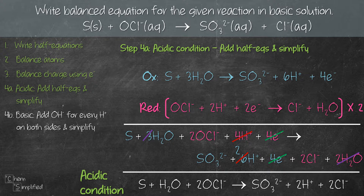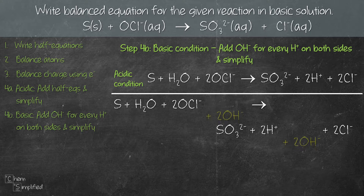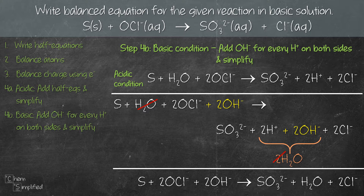If you're looking to balance in basic condition like this question, we have one more step: add OH⁻ on both sides for every H⁺ that appears in the equation. From the balanced acidic equation we have 2 H⁺, so we add 2 OH⁻ on both sides. On the right-hand side, the 2 H⁺ and 2 OH⁻ combine to give 2 H₂O. Because H₂O now appears on both sides, we simplify and end up with 1 H₂O on the right. The final equation is: S + 2 OCl⁻ + 2 OH⁻ → SO₃²⁻ + H₂O + 2 Cl⁻. That is the balanced equation in basic condition.